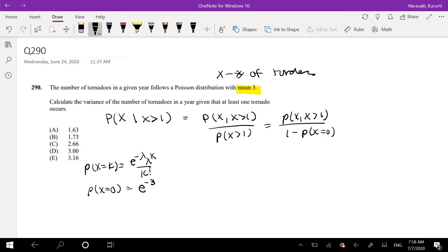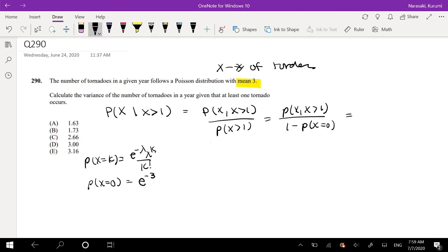3 to the 0 over 0 factorial is just that. So then, 1 minus the probability of X equals 0, that's just equal to 1 minus E to the negative 3.